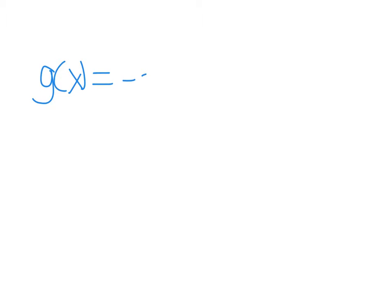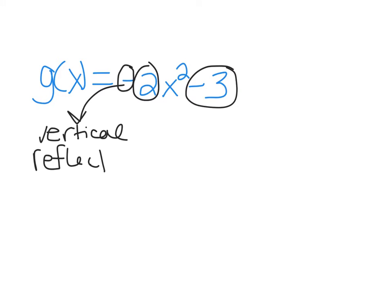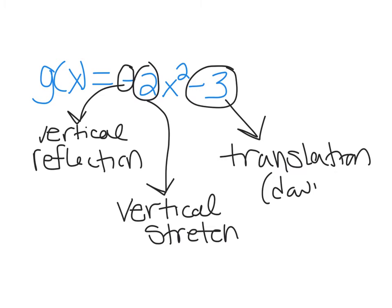Number 13: g(x) equals negative 2x squared minus 3. There are three differences from the parent function: the negative causes a vertical reflection across the x-axis; the 2, because it is greater than 1, makes the parabola grow faster — that's a vertical stretch; and the minus 3 physically moves the parabola down 3 units, which is a translation down 3 units.